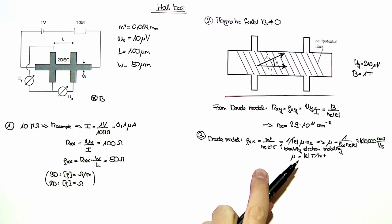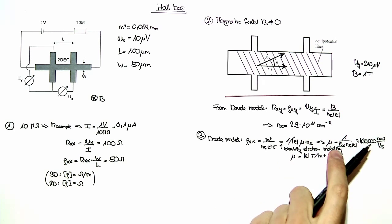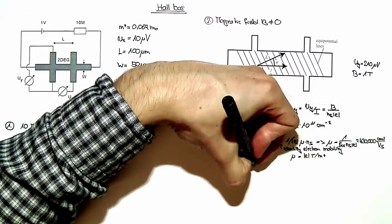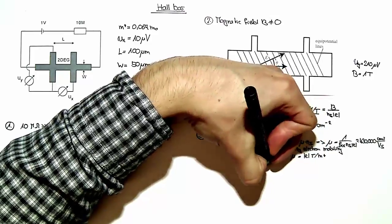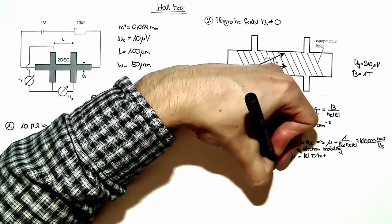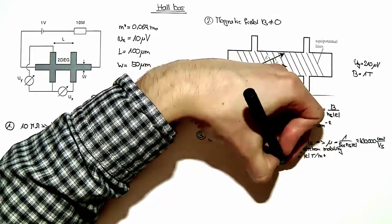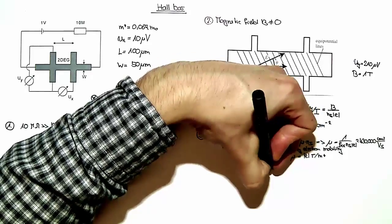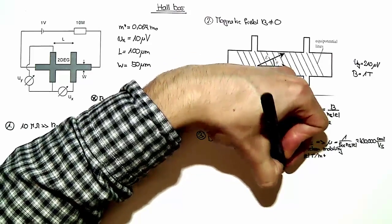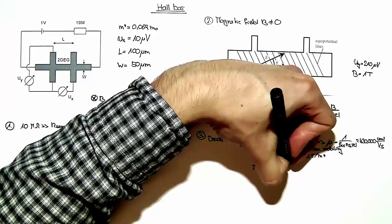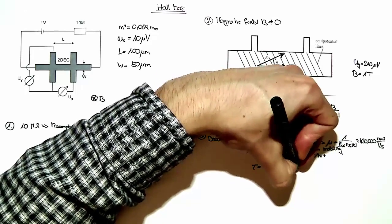From the definition of the mobility and our result here, we can write down the expression for the scattering time, tau being mu times M star over E equal to about 16 picoseconds.